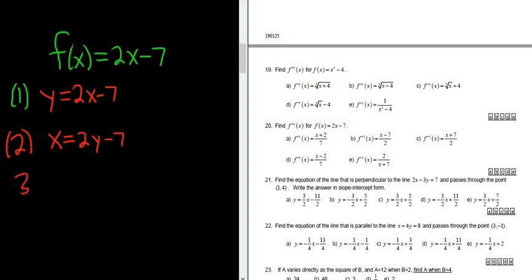And the third step is usually the hardest step in these problems. It's to solve for y. Although in this case it's pretty simple. So to solve for y we first have to isolate the term 2y. So we'll add the 7 to both sides.